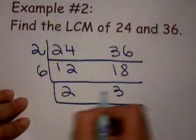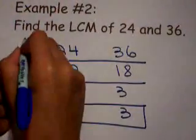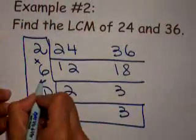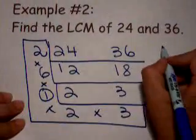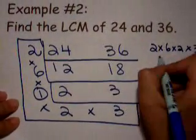Now 2 and 3 only has 1 in common. So now you're going to close your ladder and multiply everything inside L. 2 times 6 times 2 times 3.